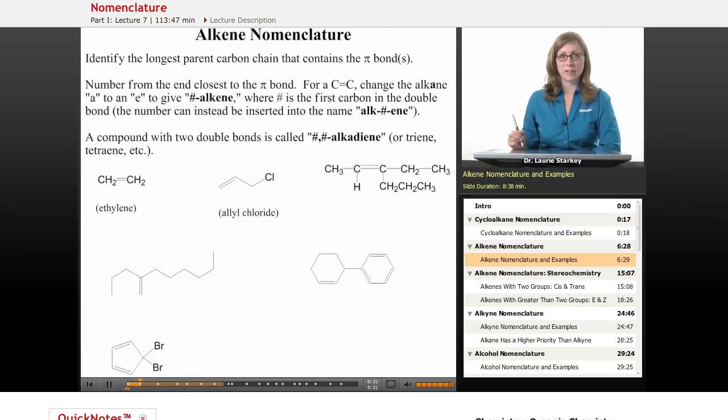If we have a carbon-carbon double bond in a structure, those compounds are called alkenes. The way we're going to name them is we're going to look for the longest carbon chain, but that longest carbon chain must include both carbons of the carbon-carbon double bond.